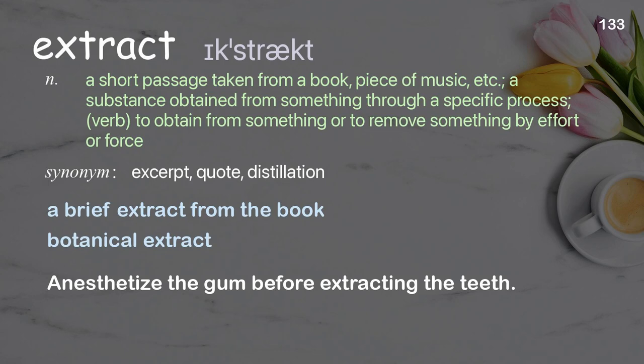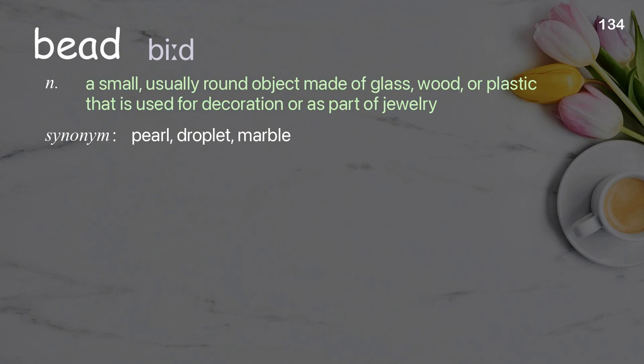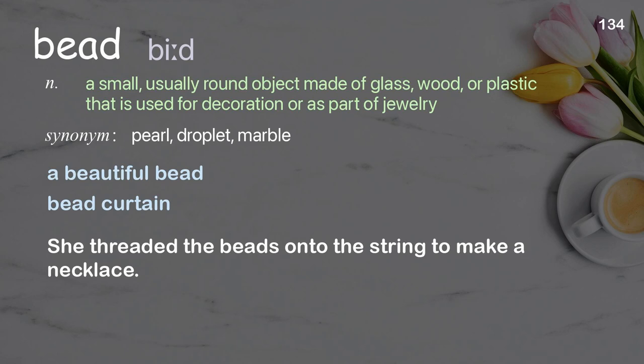Bead: a small, usually round object made of glass, wood, or plastic that is used for decoration or as part of jewelry. Examples: a beautiful bead, bead curtain. She threaded the beads onto the string to make a necklace.